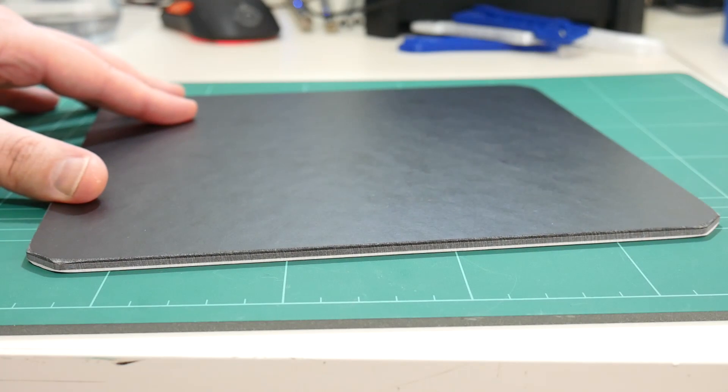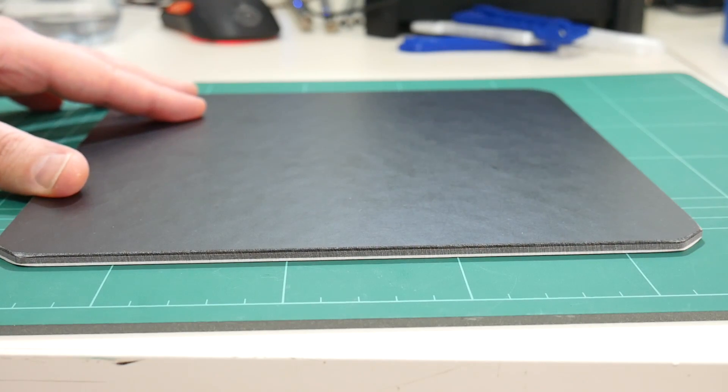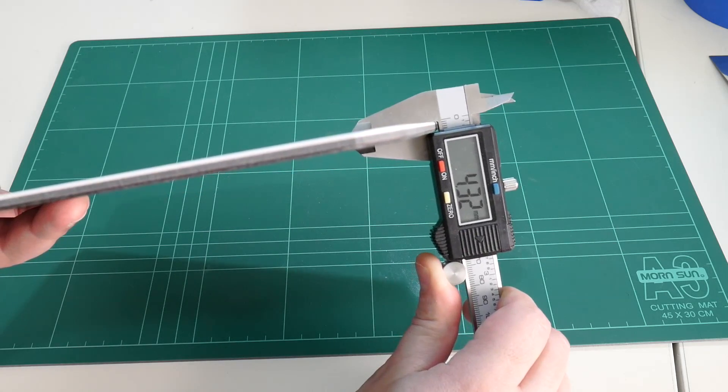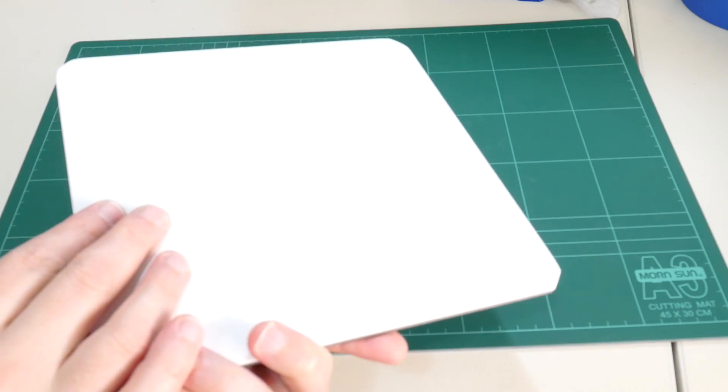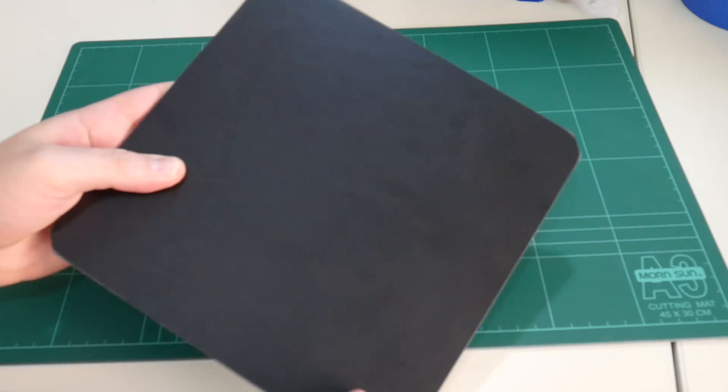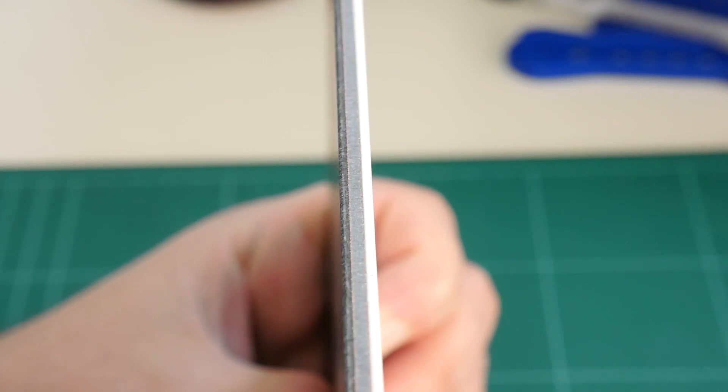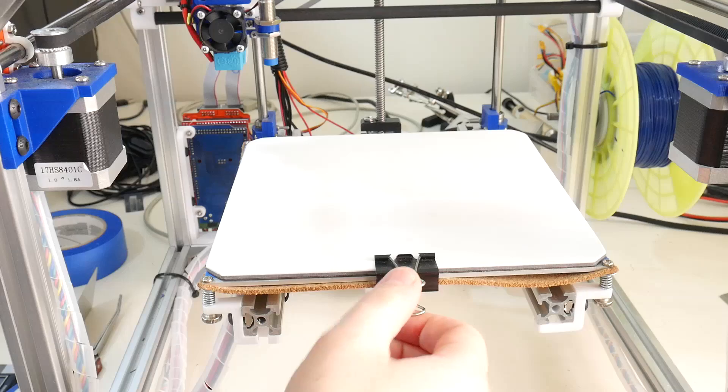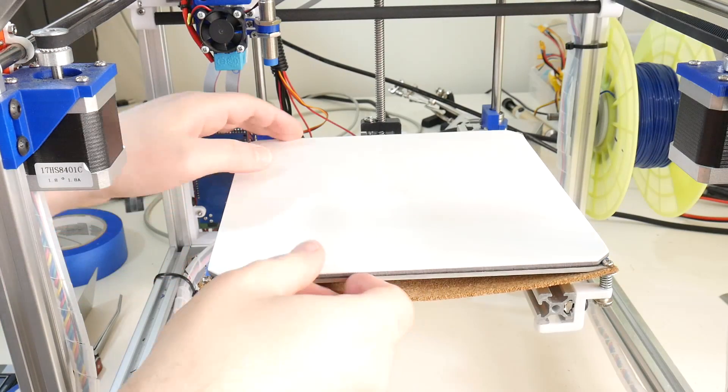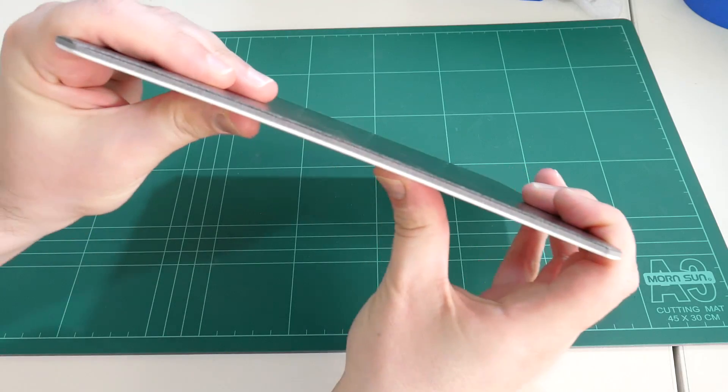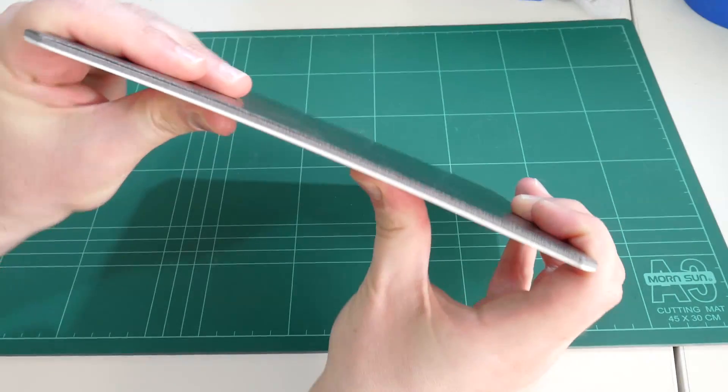One such material is PrintinZ's build plate. It sports a 4.3mm thickness, can be printed on both light and dark sides, has integrated metal plates for use with induction sensors, is removable from the build platform, and can flex to easily remove your 3D printed part.